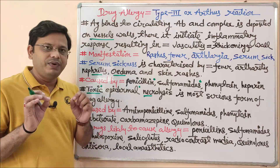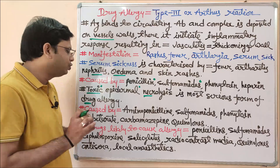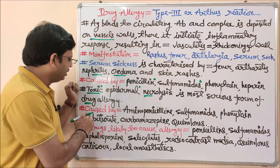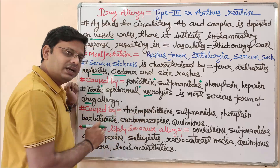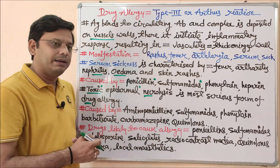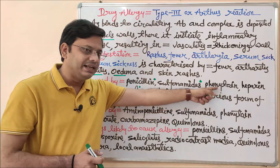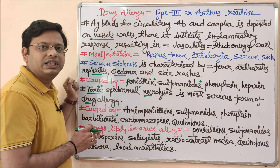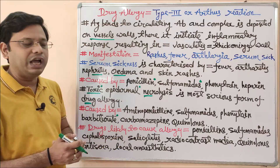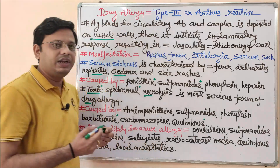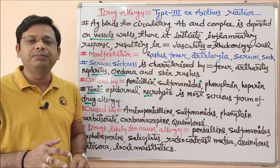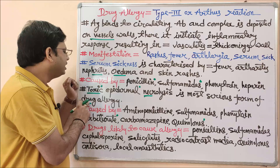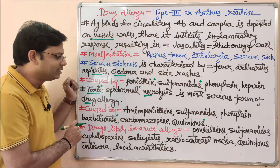These are the most serious forms of drug allergy and may be asked in your examinations. The basic drugs which can cause toxic epidermal necrosis are amino-penicillin and other types of penicillin, sulfonamides and other antimicrobial agents, phenytoin, barbiturates used in anti-anxiety and sedative treatments, carbamazepine used as an anti-epileptic drug, and quinolones, which are important antibiotics used as chemotherapy for microbial agents.